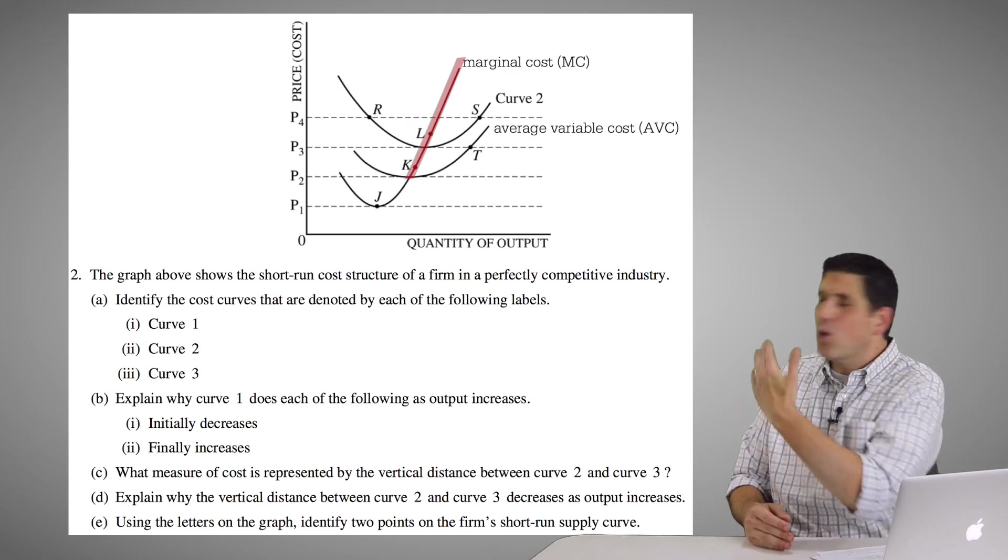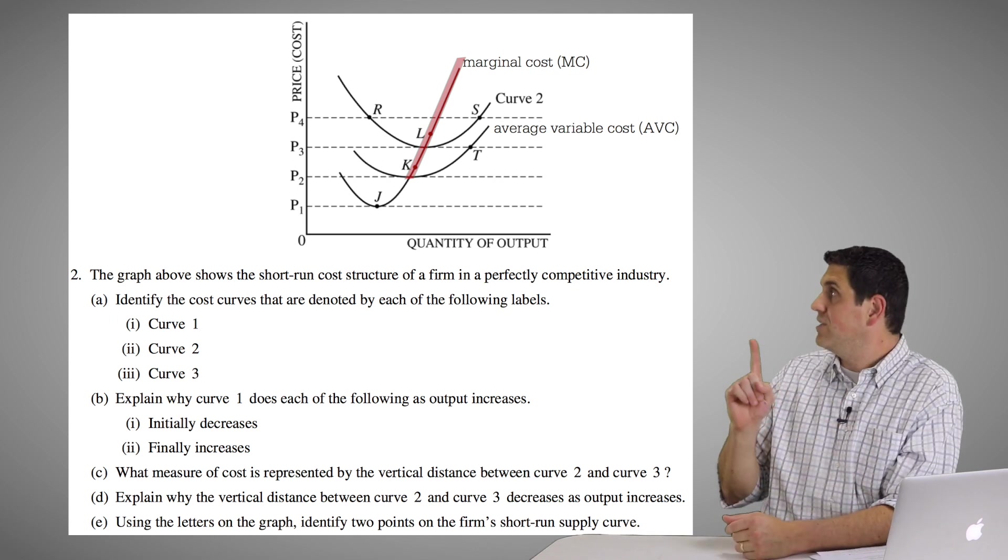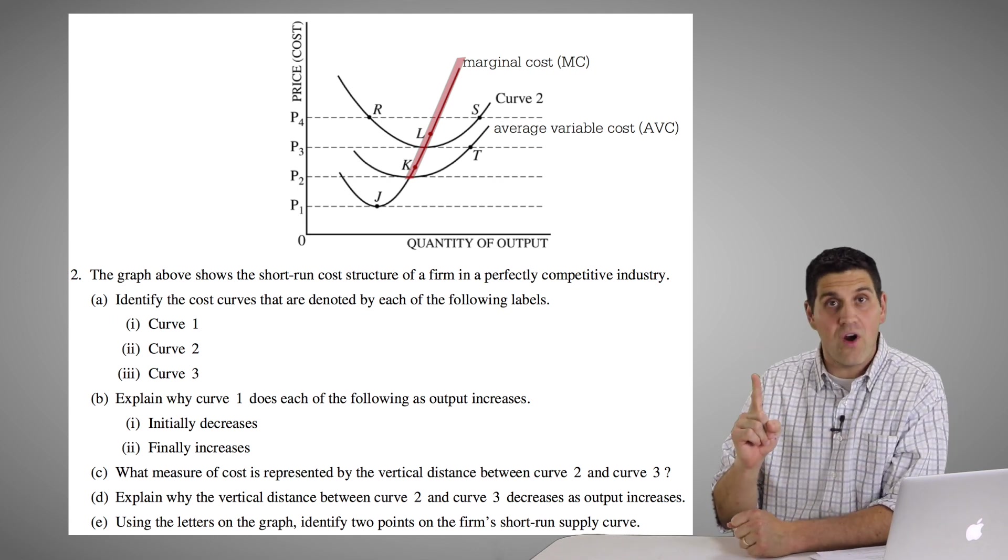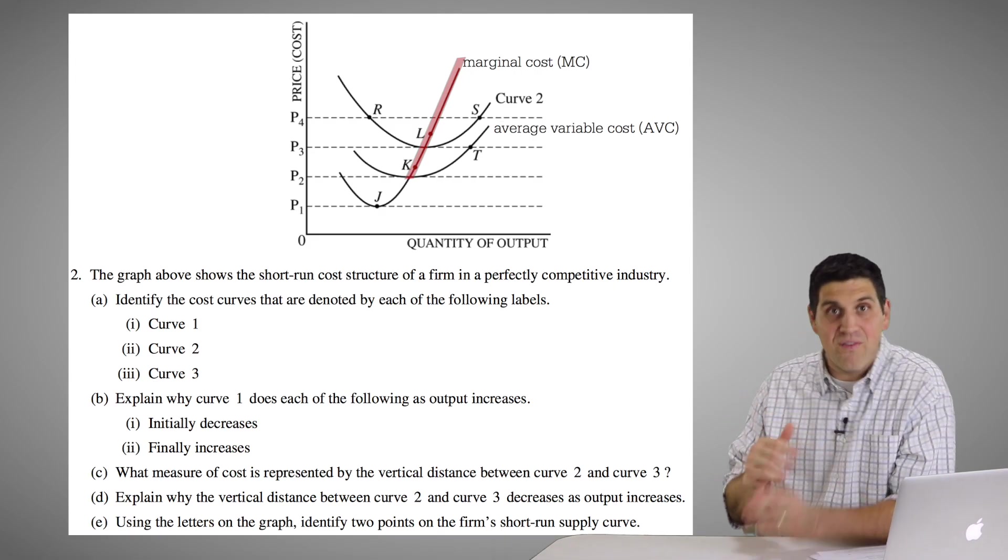So the marginal cost curve above the average variable cost curve is the short run supply curve. And the reason why is it shows the law of supply. As the price goes up from P2 to P3 to P4, price is going up and the quantity this firm should produce should go up because they produce where MR equals MC.